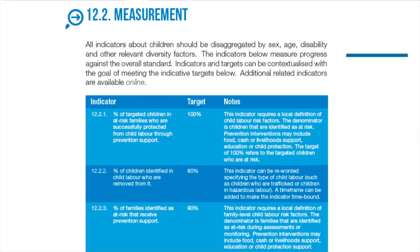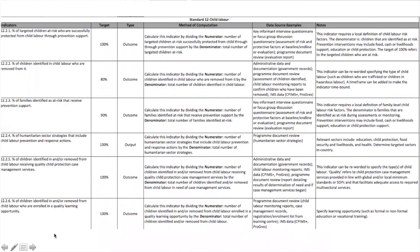Each standard has approximately 10 to 20 indicators. I would really encourage you, if you haven't seen that longer list of indicators, to take a look through it, especially when engaging in this contextualization exercise. This is a screenshot of that longer list. We have also enhanced the table to include the type of indicator, the method of computation — which explains how to calculate the indicator and the numerator and denominator — and data source examples. This additional information will support you in applying and measuring the indicators.